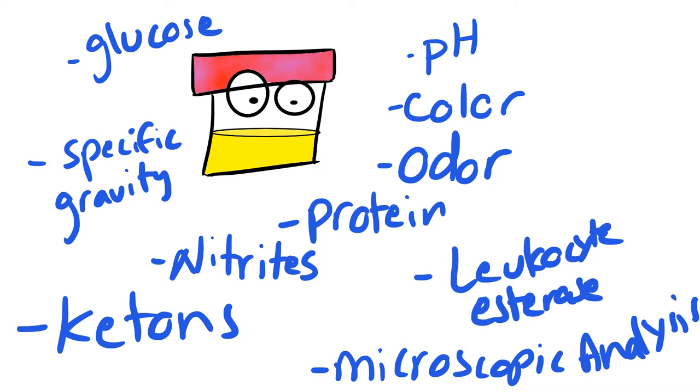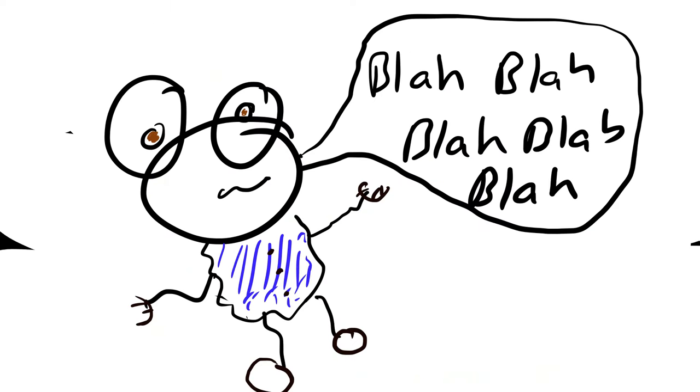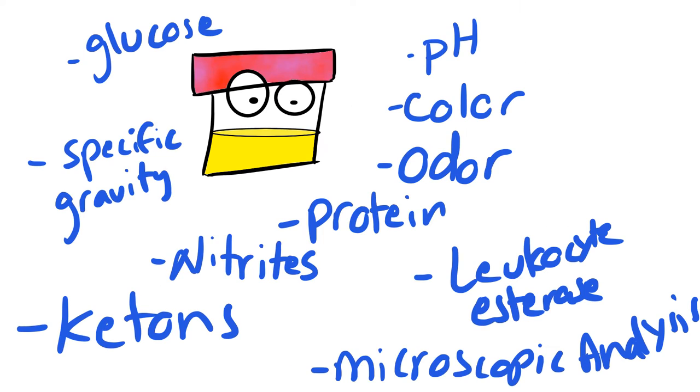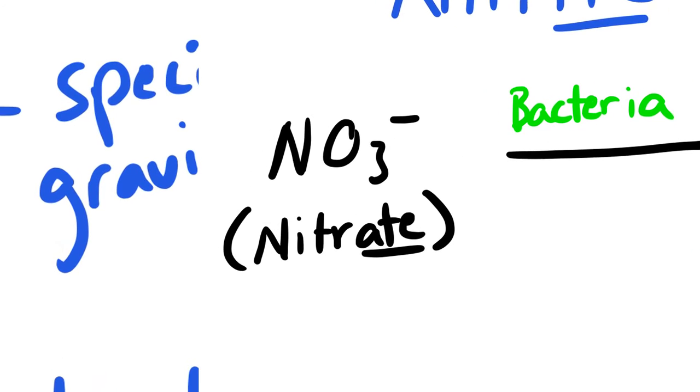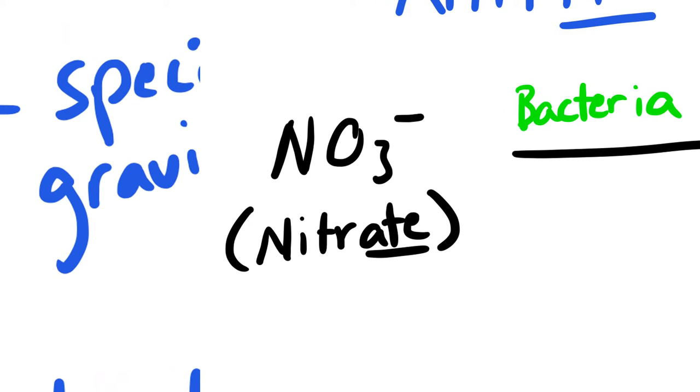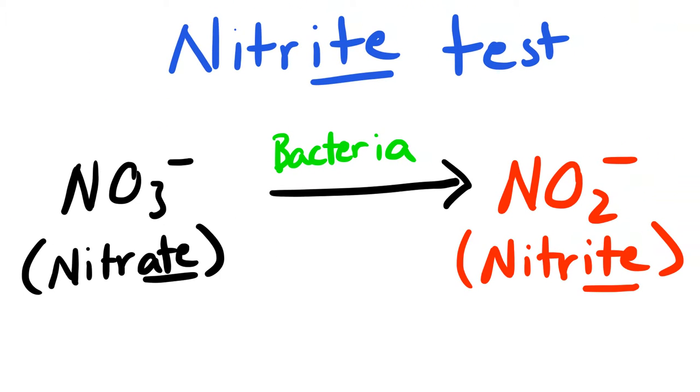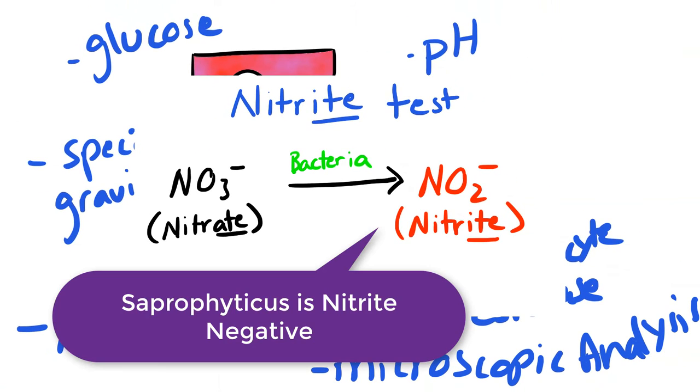The first thing for all UAs is to get a clean catch, so that means when we get our UA results back, we see very few squamous cells. One of the tests performed as part of the UA is a nitrite test. Normally our urinary tract is free of bacteria, but there are certain types of bacteria like E. coli which can turn our nitrate, which is normally produced by our body and inside the urine, to nitrite.